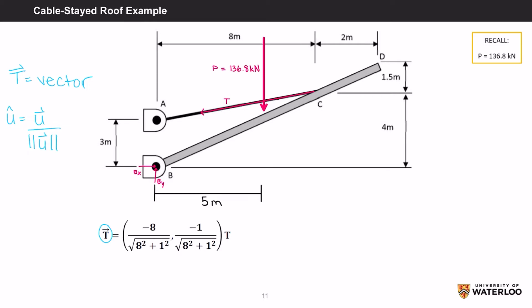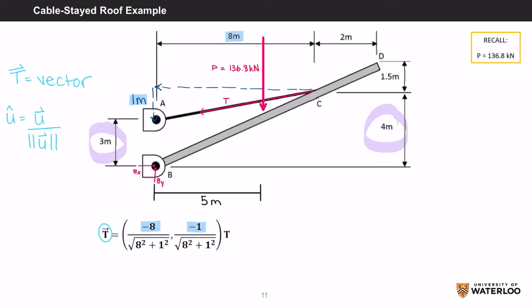So starting from C to A, it travels 8 meters to the left and down 1 meter as 4 subtract 3 is 1 meter. So negative 8 and negative 1 represent the U in our equation since they are the direction. We then divide each number by the length of U, which is the length of the cable. The length of the cable is equal to the square root of 8 squared plus 1 squared. We'll then get negative 0.99 in the x direction and negative 0.124 in the y direction.